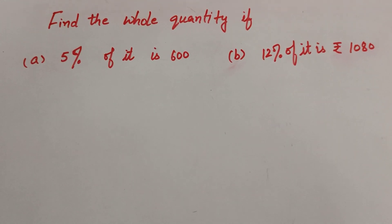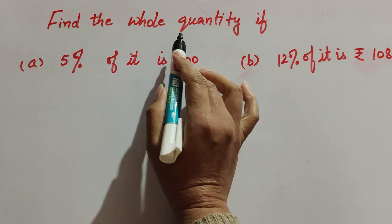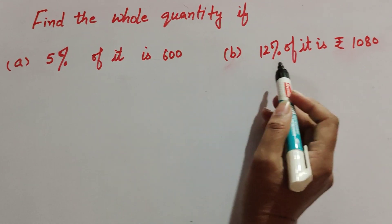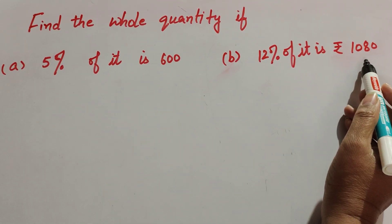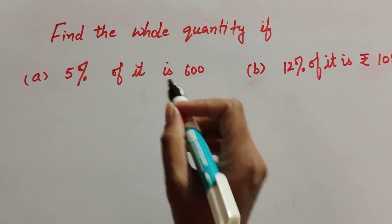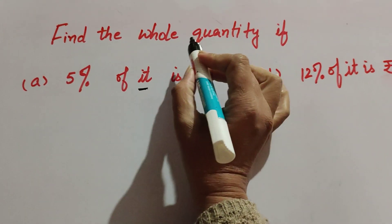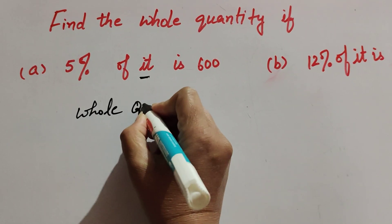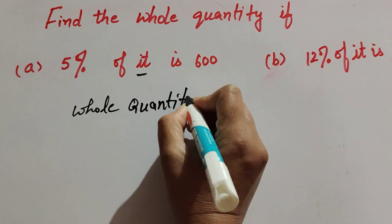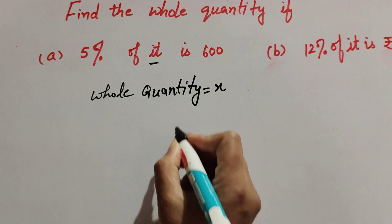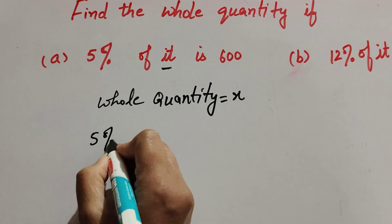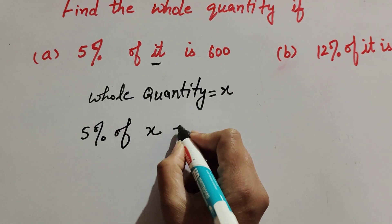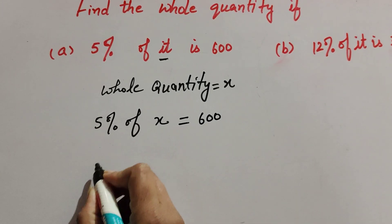Hello friends, welcome to my channel. In this video we discuss finding the whole quantity. In part a, 5% of it is 600. Here 'it' means whole quantity, so we suppose the whole quantity is x. So 5% of x equals 600.